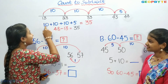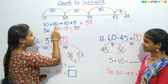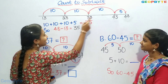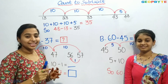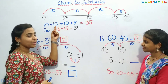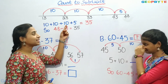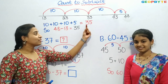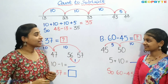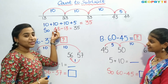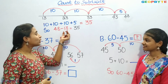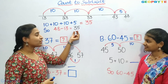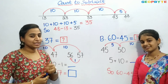That is, 10 plus 10 plus 10 plus 5. 10 plus 10 is 20. 20 plus 10 is 30. 30 plus 5 is 35. We got 35. So, she bought 48 bananas and only 13 were left. So, 35 friends each got a banana.